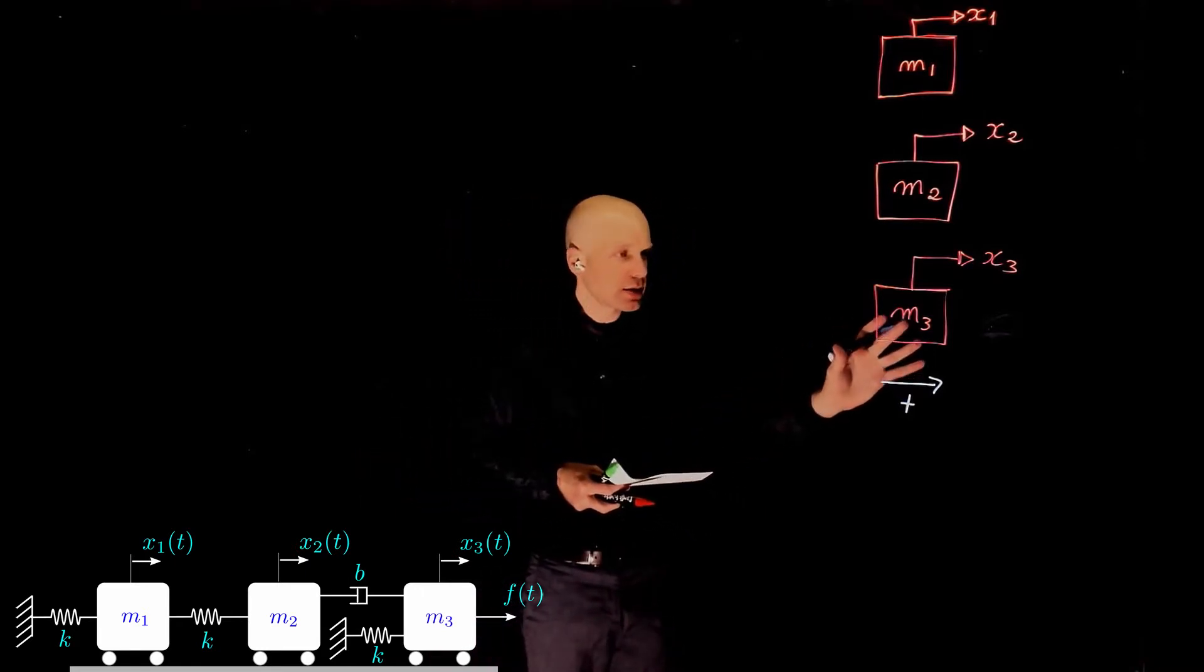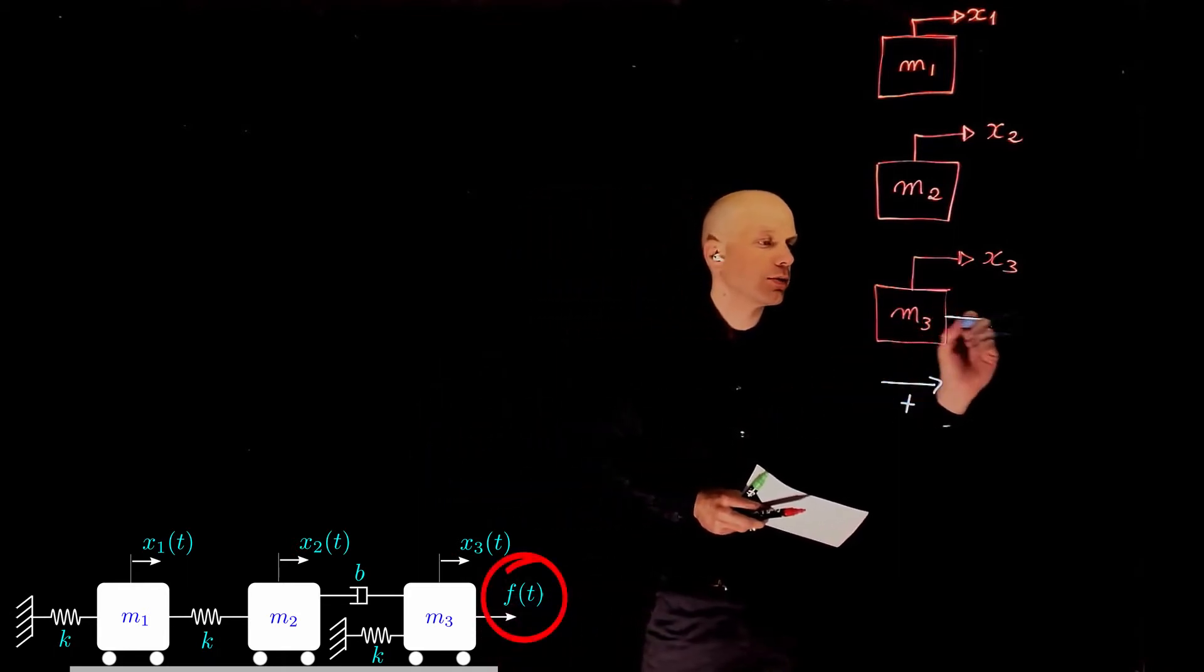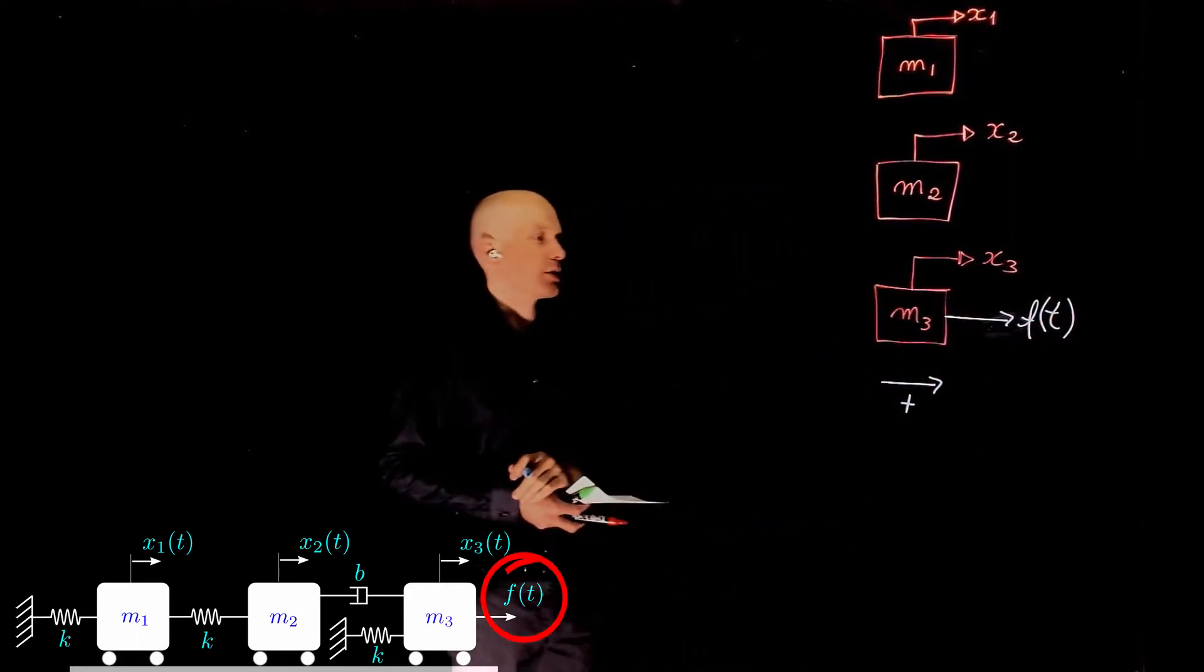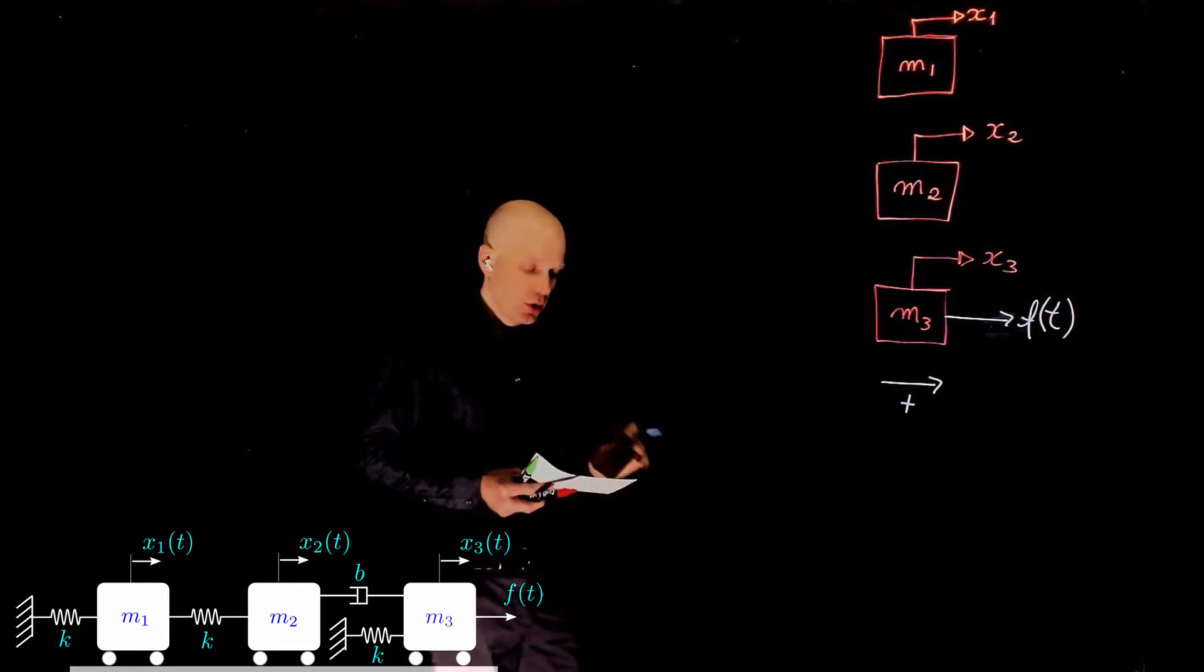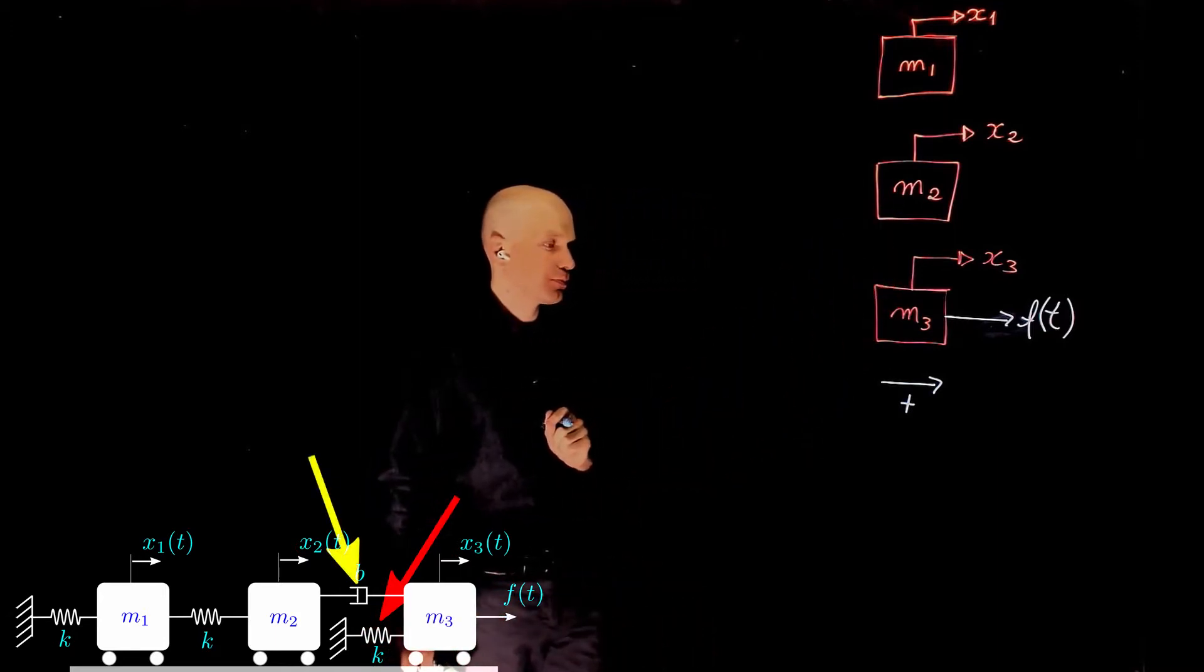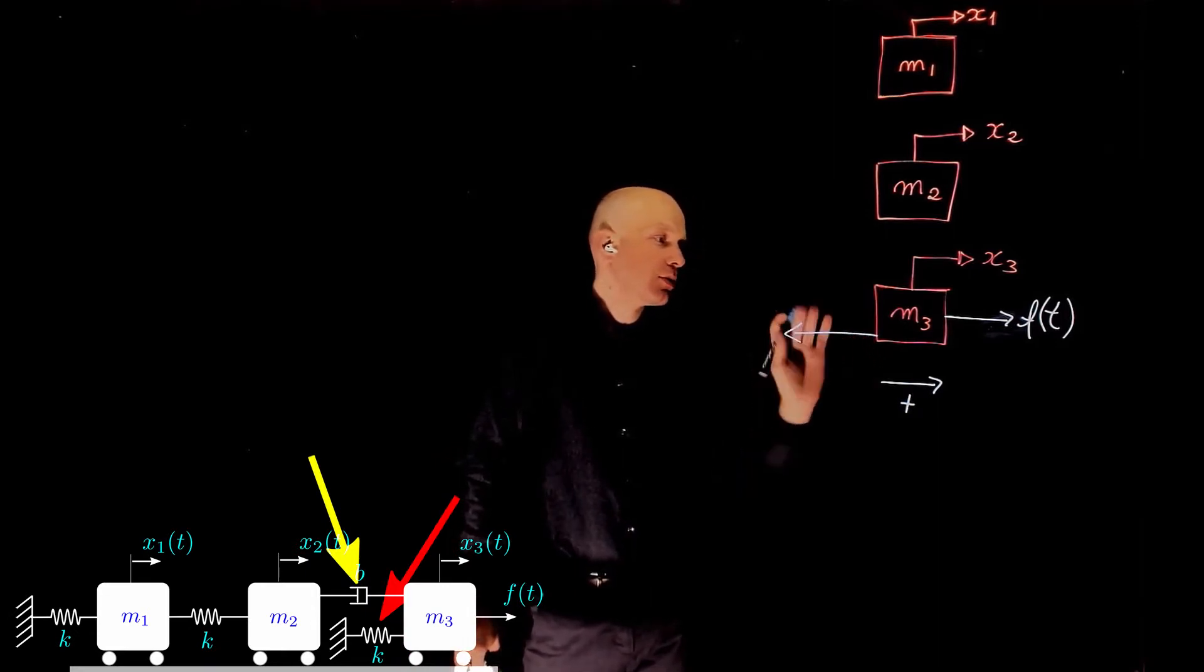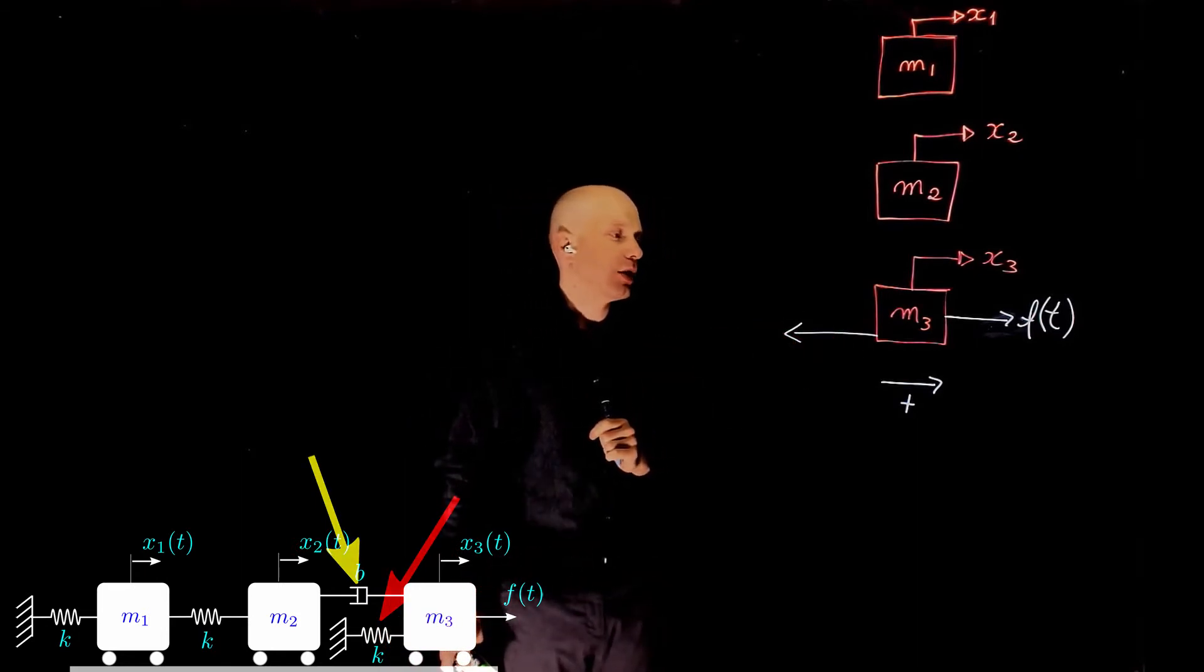Let's start with mass m3. At mass m3 we have the input force f(t) that is being applied to mass m3 and we have two resistive forces, one due to the spring and the other one due to the damper that connects m3 and m2. Both forces are opposing the acceleration of the mass and thus they act to the left.